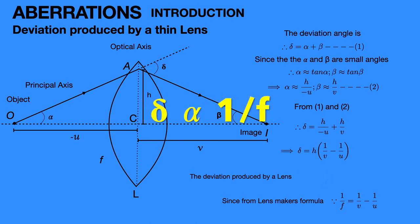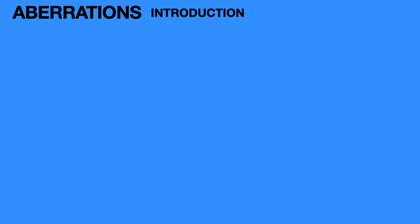Similarly, the deviation is inversely proportional to the focal length of the lens. As the focal length of the lens increases, the deviation of a specified light ray decreases, and vice versa. This will be useful in the aberrations topic. So this is our topic.